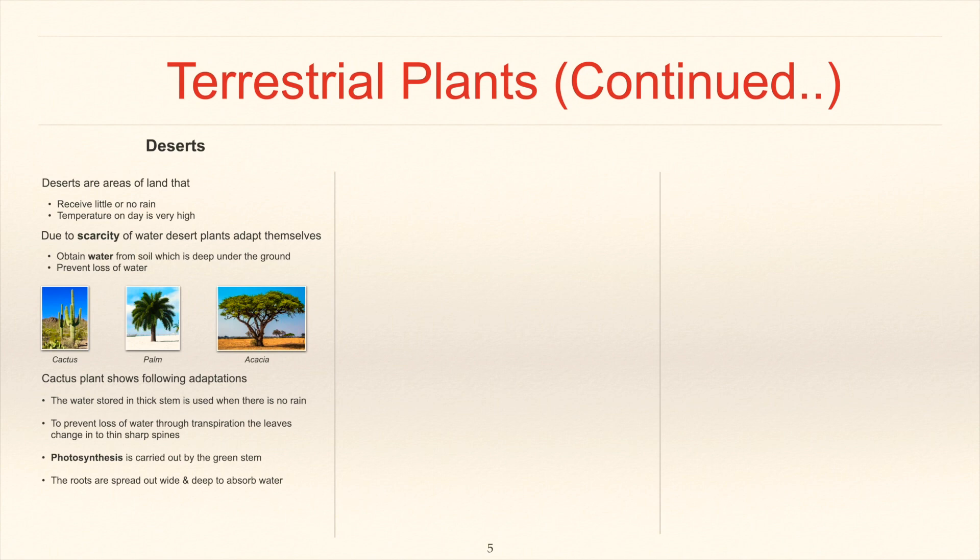Cactus plant shows following adaptations. The water stored in thick stem is used when there is no rain. To prevent loss of water through transpiration, the leaves change into thin sharp spines. Photosynthesis is carried out by the green stem. The roots are spread out wide and deep to absorb water.